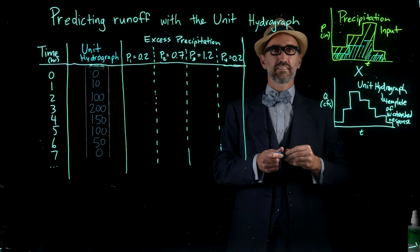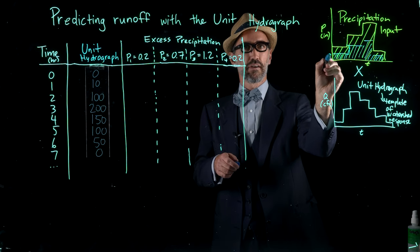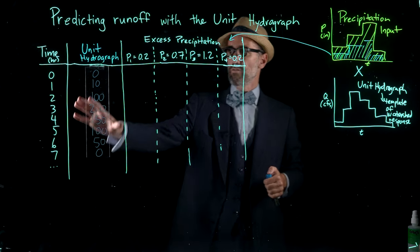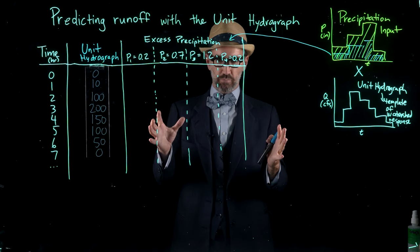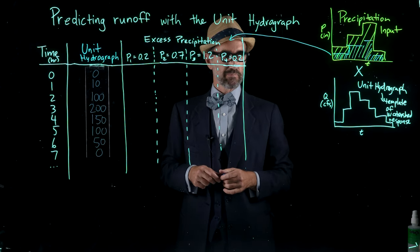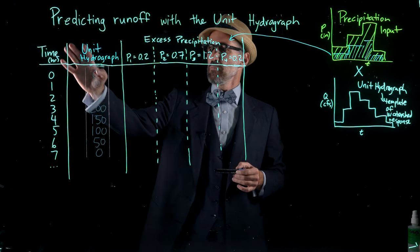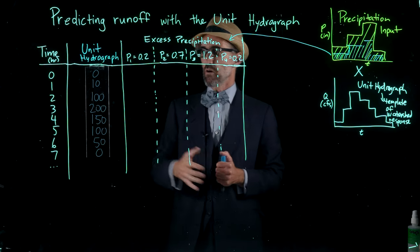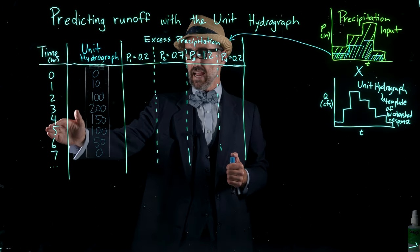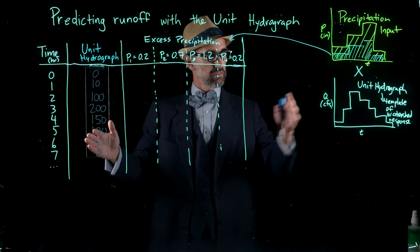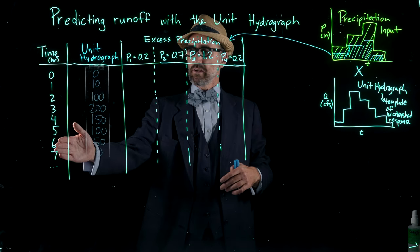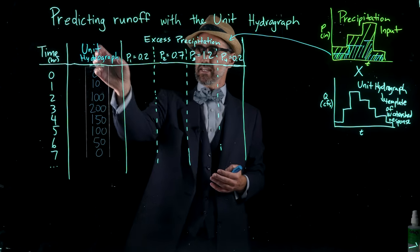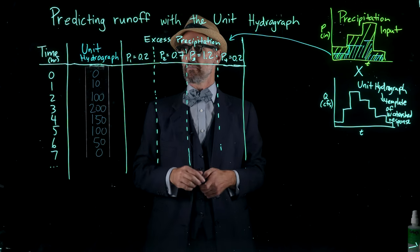And so then we have a lower overall input of what's called excess precipitation. This excess precipitation is what I have quantified along the top here. We're going to solve this problem using this table. The first column is the time in hours, so we're moving through during and after this storm, which the precipitation input was only four hours. The second column is this unit hydrograph.